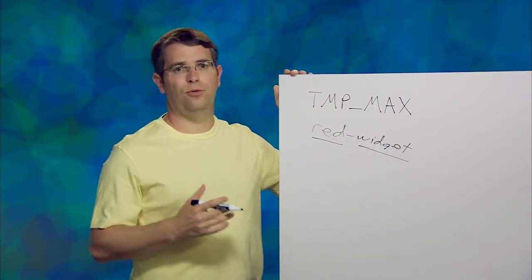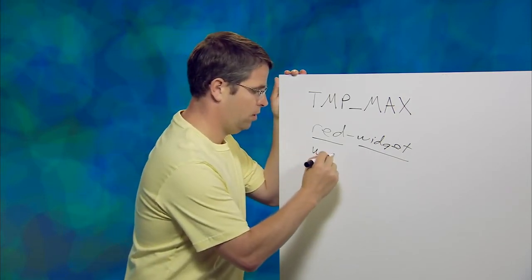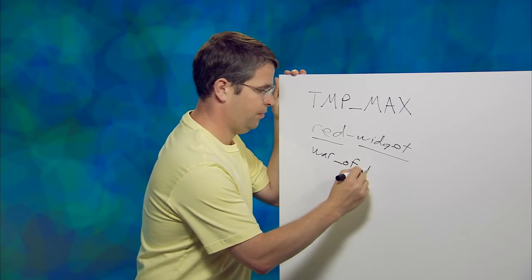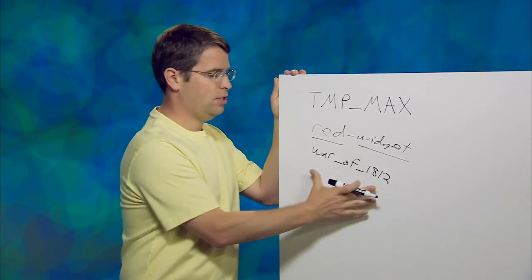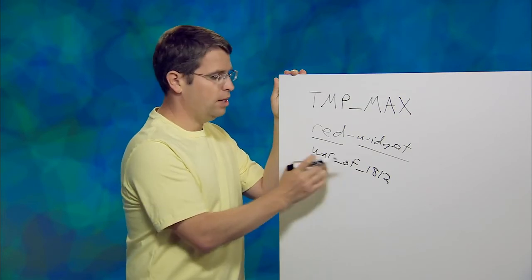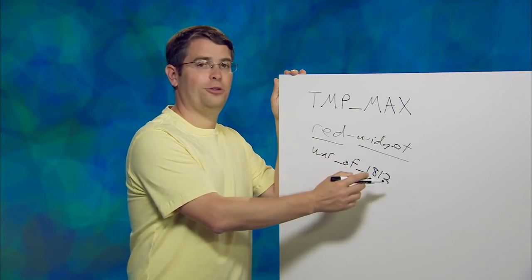Whereas if you were to have war_of_1812 with underscores, instead of separating on the underscores, we actually glom all those together. So that's one term that you could find by searching for war_underscore_of_underscore_1812.